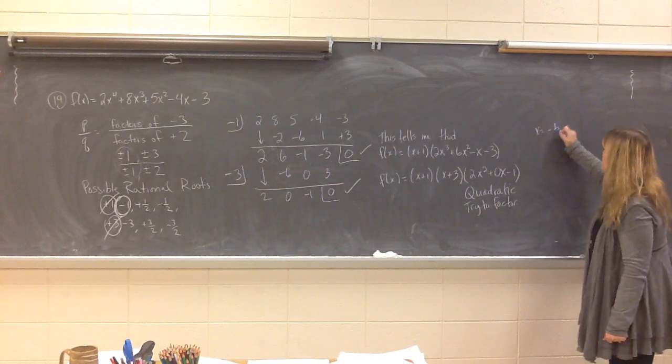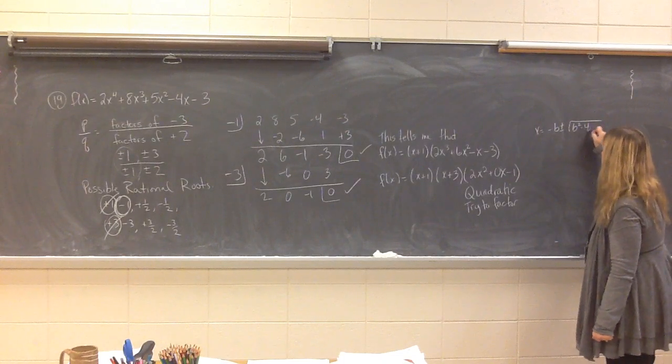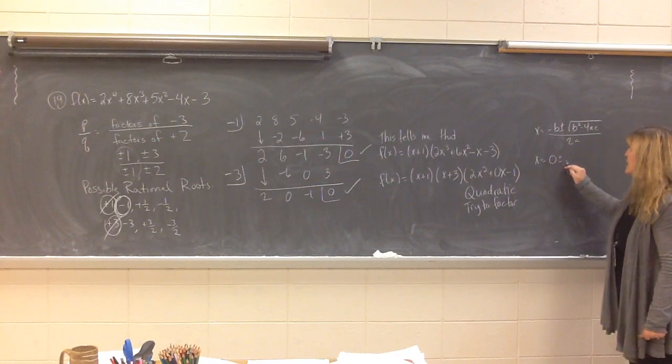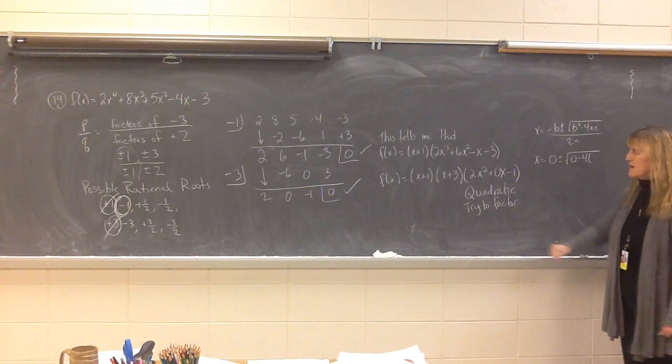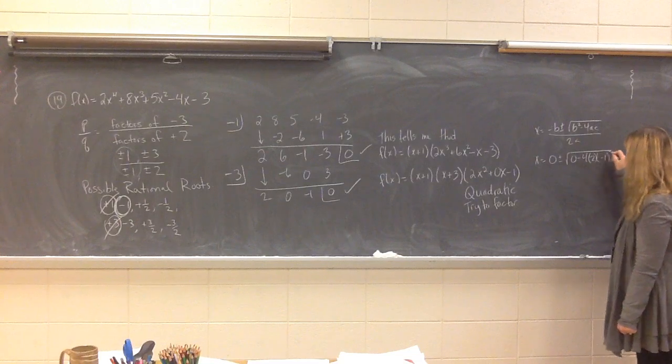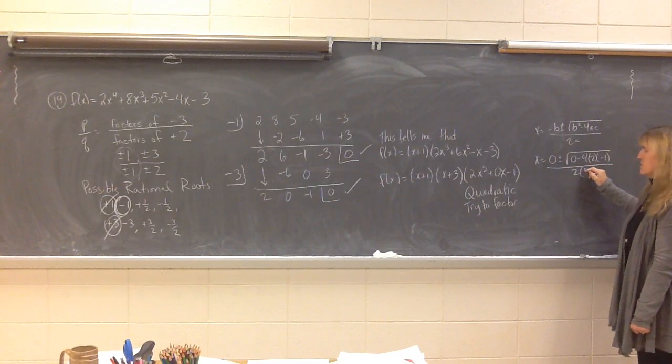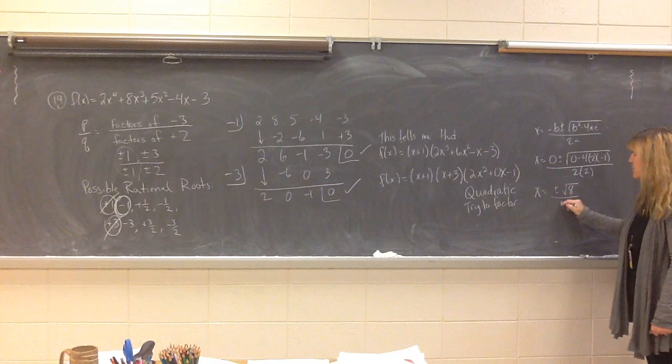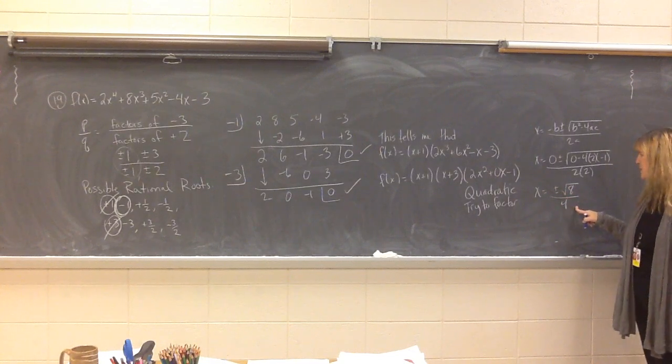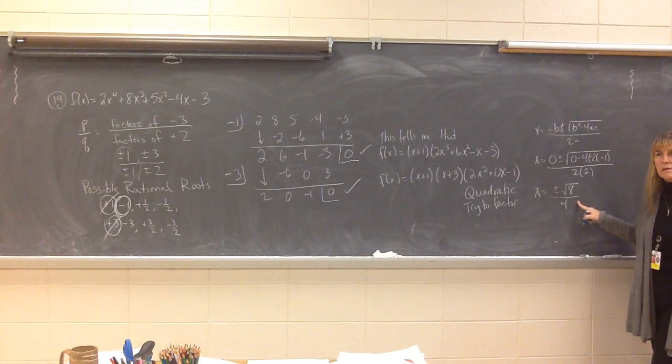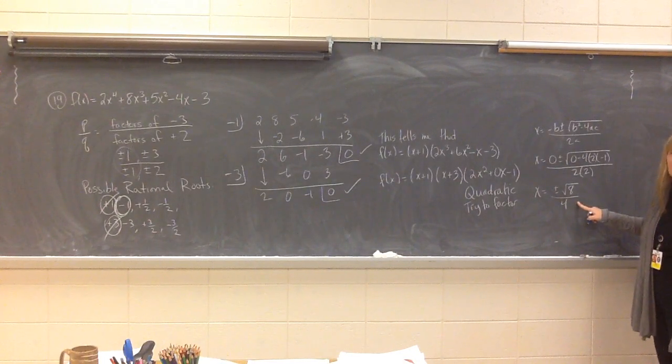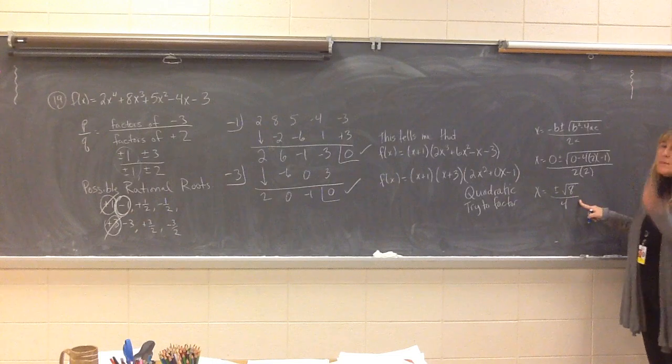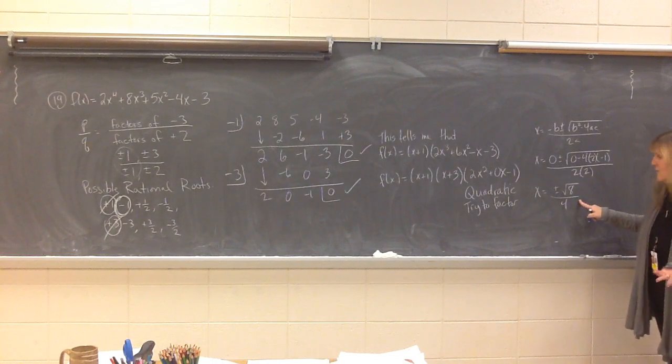So, x equals negative b plus or minus the square root of b squared minus 4ac all over 2a. x equals 0 plus or minus the square root of minus 4 times 2 times negative 1 all over 2 times 2. This is what? Square root of 8 over 4 plus or minus. Okay, well, what kind of roots are these? Give me a word that describes these roots. Imaginary. The minute you say imaginary, you go, oh, no, no, no, no, because imaginary means you have a what there? It means you've got an i or a negative under the radical. So they're not imaginary, therefore they must be real.